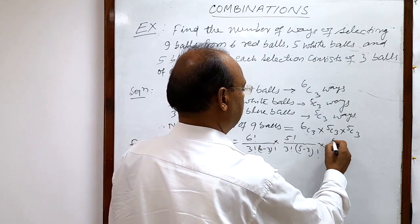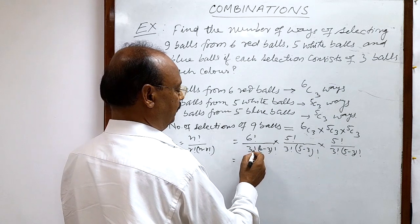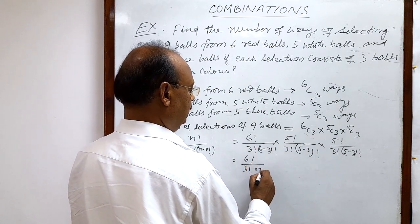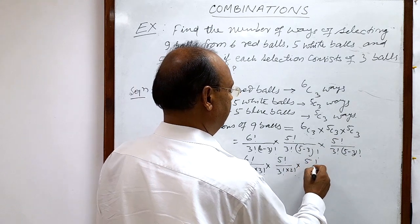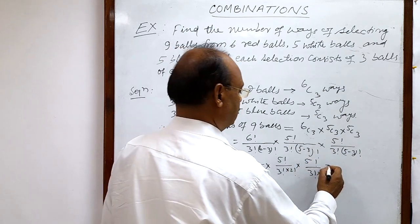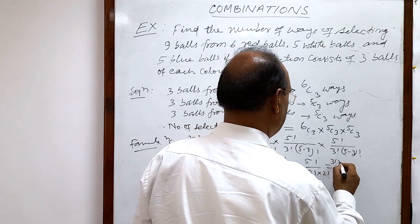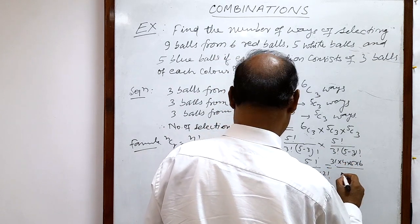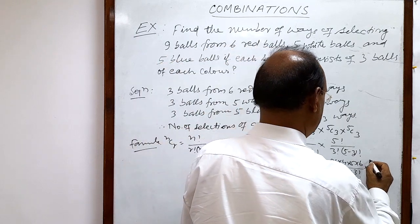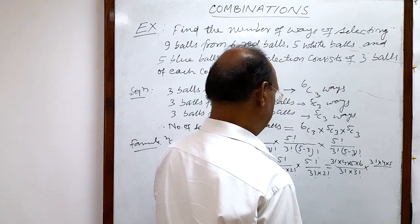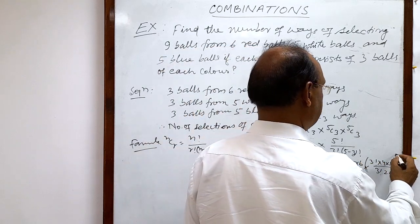Let us evaluate it. We have 6! / (3! × 3!) for the red balls, and 5! / (3! × 2!) for the white balls, and again 5! / (3! × 2!) for the blue balls. The 3! in the numerator of 6! cancels with part of the denominator, since 6! = 3! × 4 × 5 × 6 divided by 3! × 3!. Similarly, 5! = 3! × 4 × 5 divided by 3! × 2!. Since we are multiplying the same thing twice, it can be written as a whole square.